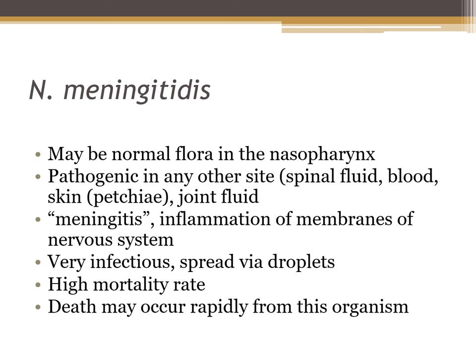In the disease progression of Neisseria meningitidis, patients usually start with a headache, fever, and stiff neck. Then they develop a speckled rash known as petechiae. Then they progress to delirium and convulsions, followed by disseminated intravascular coagulation — DIC. Then they fall into a coma and eventually die. That's the disease progression of Neisseria meningitidis.